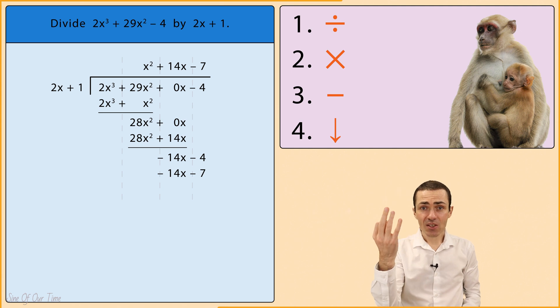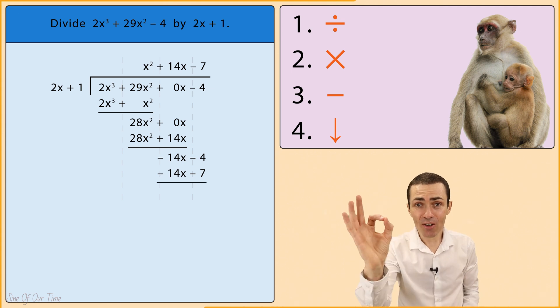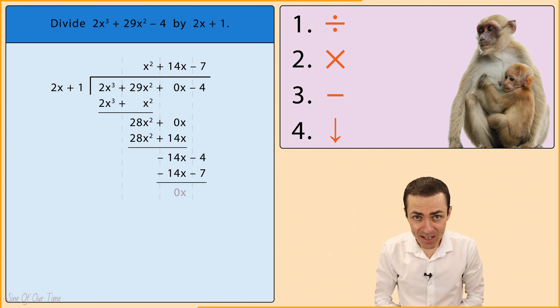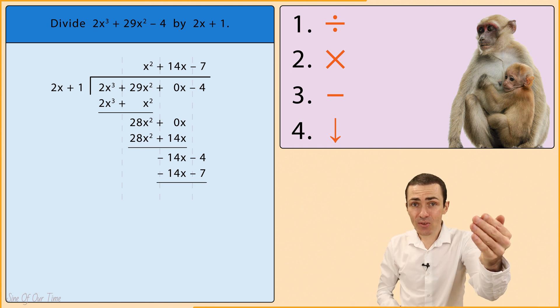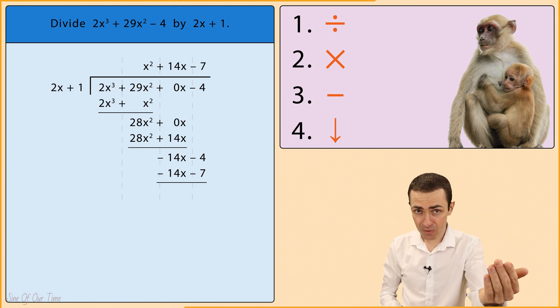Step 3: Subtract. Negative 14x subtract negative 14x gives us 0x, which is not necessary for us to write down. And then negative 4 subtract negative 7 gives us positive 3.